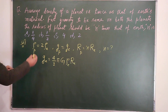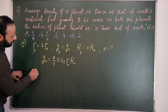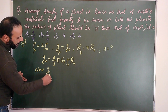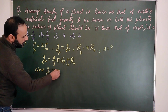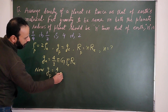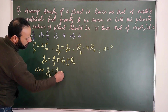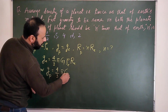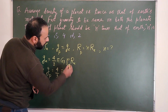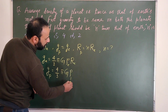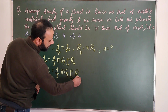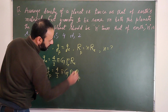Now, the gravity on the planet: gp = (4/3) π G ρ_planet × R_planet. The formula is the same, using the density of the planet and the radius of the planet.